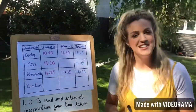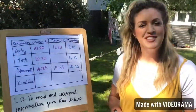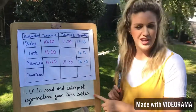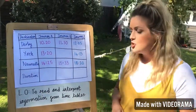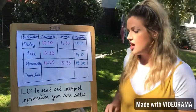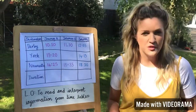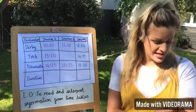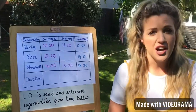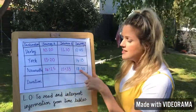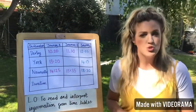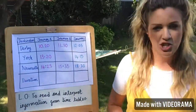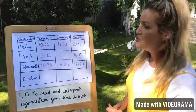Okay, Year Five! Today we are continuing with our learning objective from yesterday: reading and interpreting information from timetables. But today we're getting a little bit harder because we are now working with 24-hour digital time.